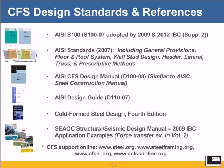The Structural Engineering Association of California has a structural and seismic design manual, the latest version being the 2009 IBC. There are three manuals altogether. They're coming out with the 2012 IBC version, expected sometime in the fall — September or October. The 2012 version will have more than three volumes.